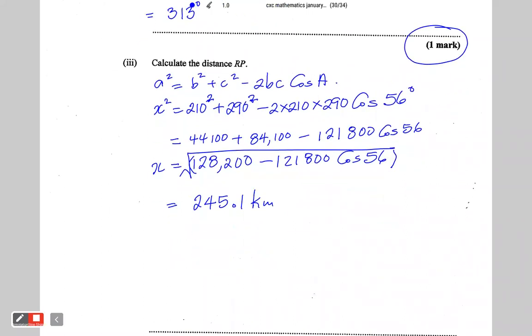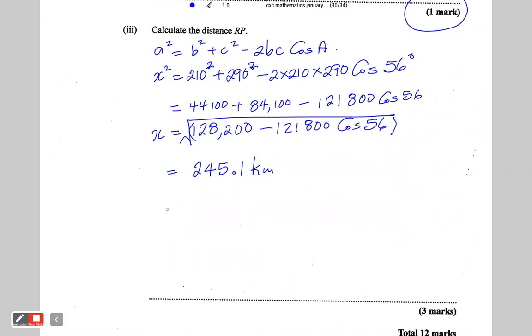So X, which is the length of X, which is RP, is equal to 245.1 kilometers.